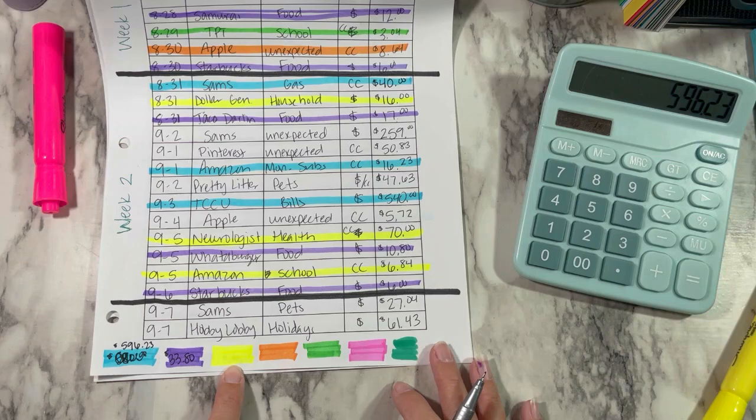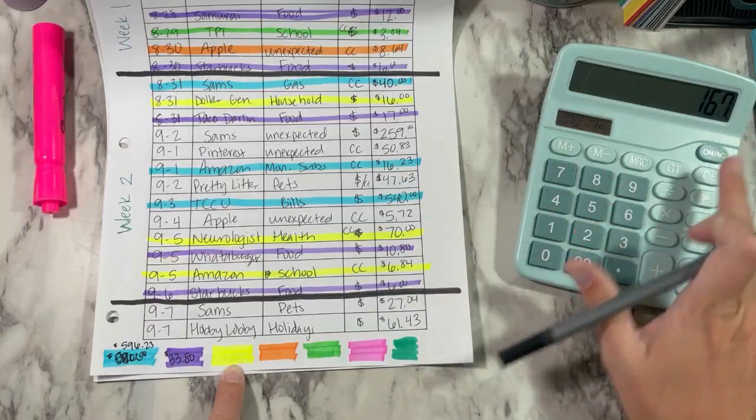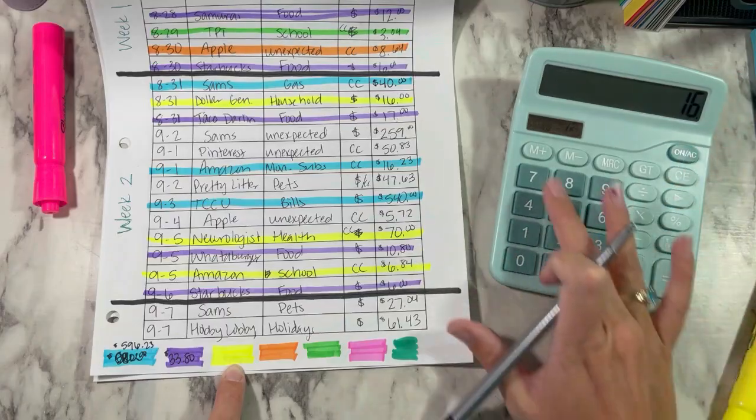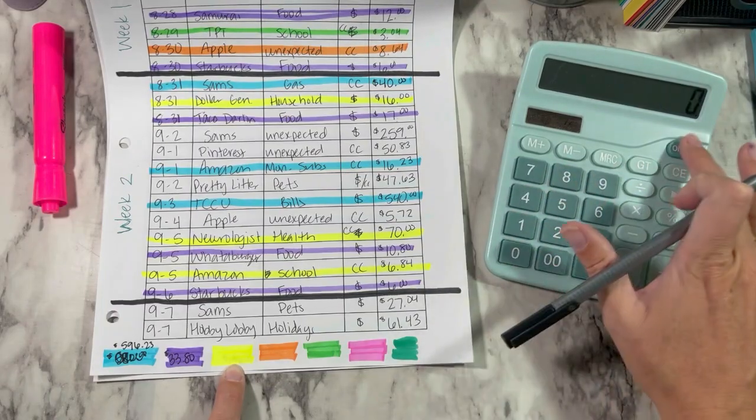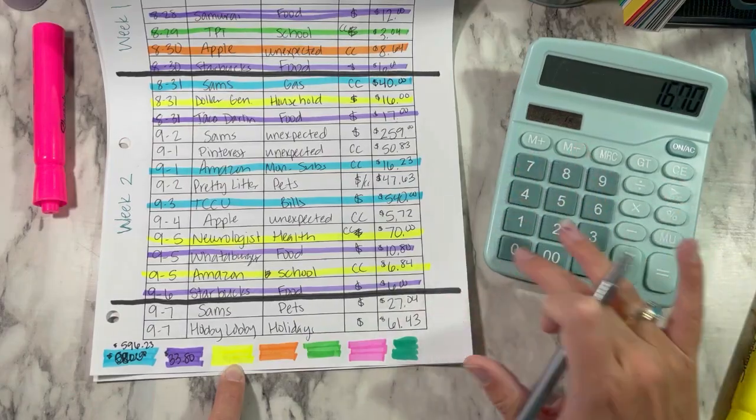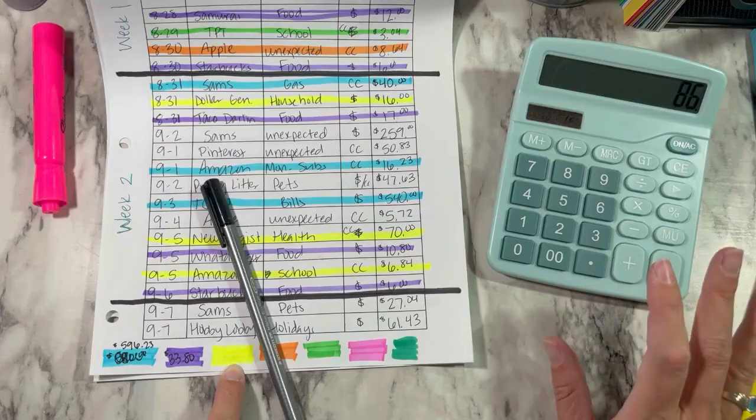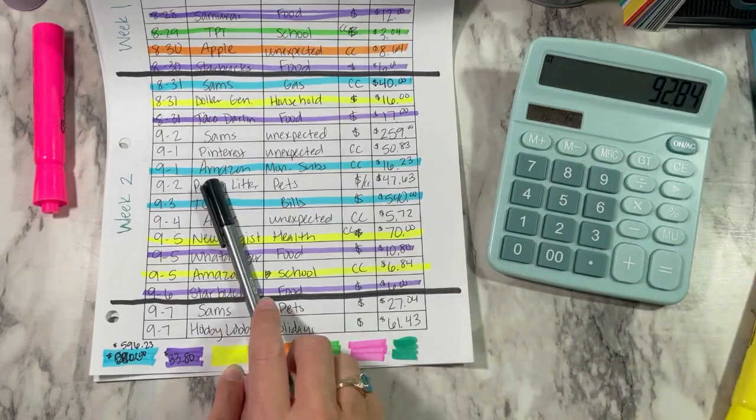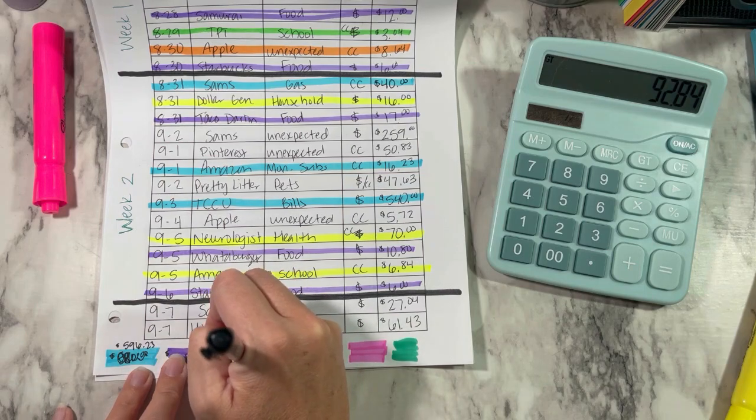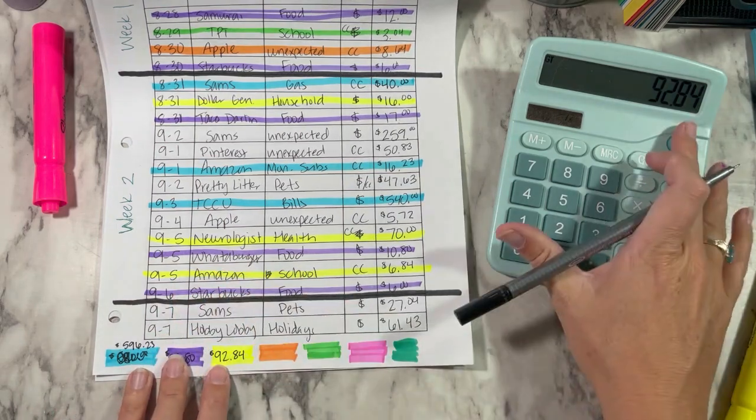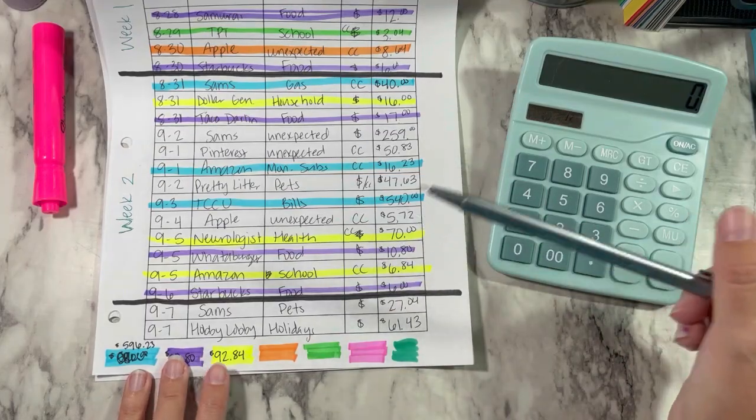So for low priority, I had $16 for household. $16 for household plus the $70 from my neurology appointment. That was my co-pay. Whoops, I cannot work this calculator today, guys. Oh my gosh. Okay, $16 plus $70 plus $6.84. Okay, there we go. So $92.84 for low priority. And most of that came from my co-pay at the neurologist.